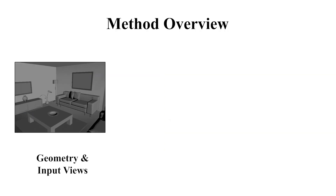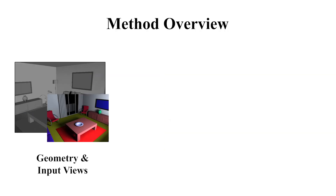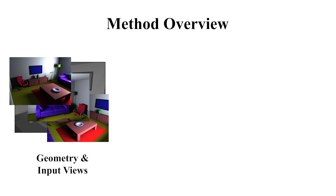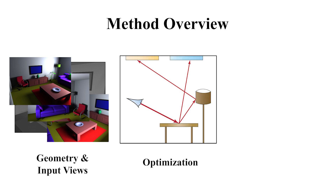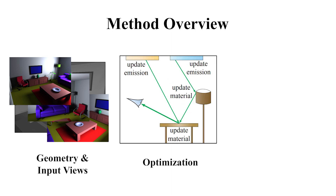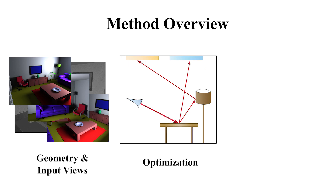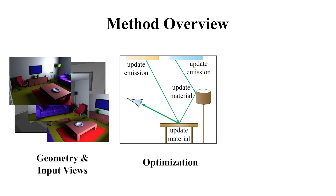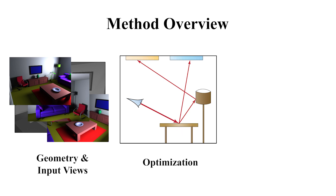Our method takes the scene geometry and a series of images as input. From an initial guess of material and emission parameters, we render the scene with a path tracer. In a second path tracing pass, we estimate the derivatives with respect to the unknown parameters.